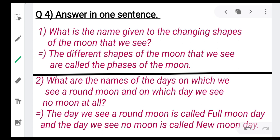The second question, what are the names of the days on which we see a round moon and on which day we see no moon at all? Answer for this question is, the day we see a round moon is called full moon day and the day we see no moon is called a new moon day.